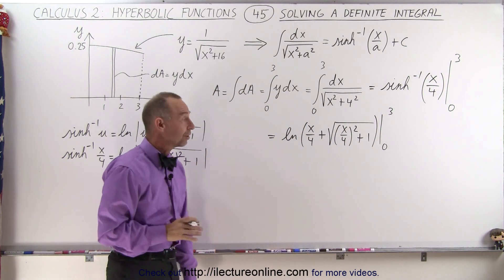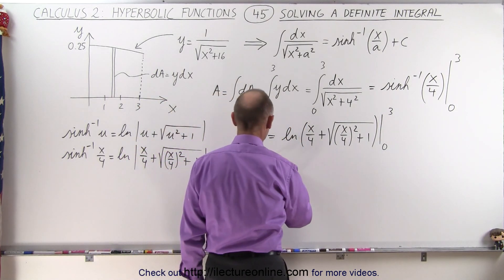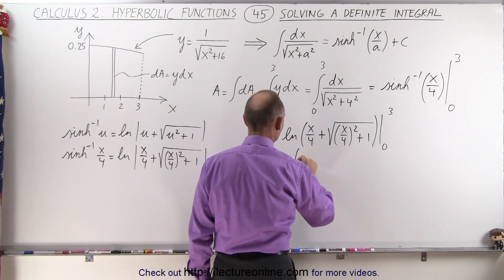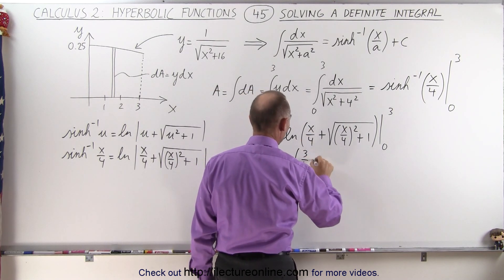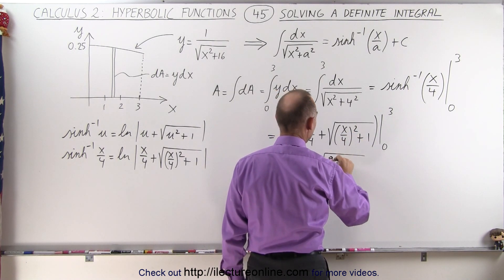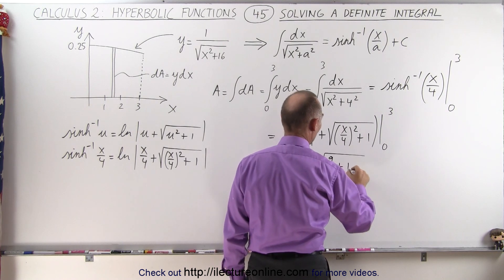And now all we have to do is plug in those limits and see what we get. So plug in the upper limit, we get the natural log of 3 over 4 plus the square root of 3 over 4 squared. That would be 9 over 16 plus 1.